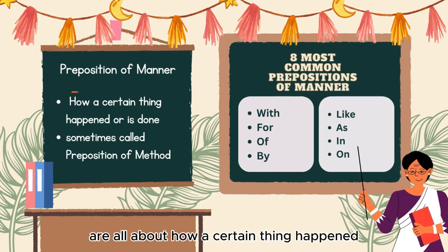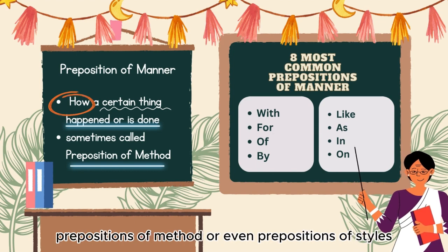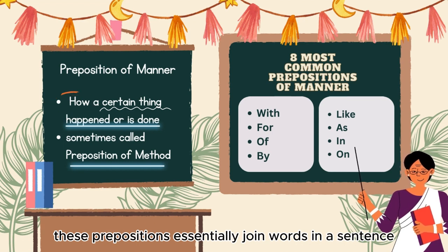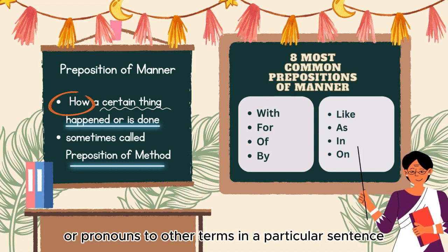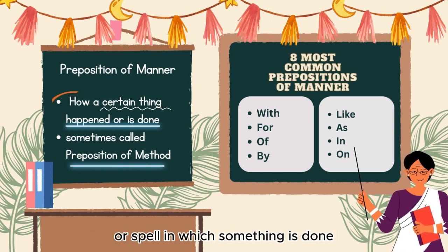Now we are going to discuss prepositions of manner. Prepositions of manner are all about how a certain thing happened or is done. They are sometimes referred to as prepositions of method or prepositions of style. These prepositions join words in a sentence, connecting nouns, phrases, or pronouns to other terms, and provide a clear picture of the method or style in which something is done.